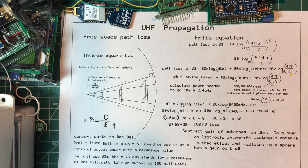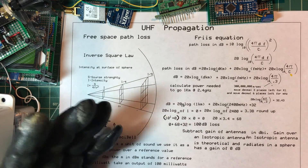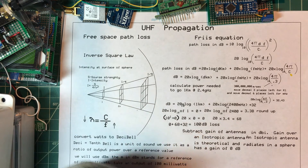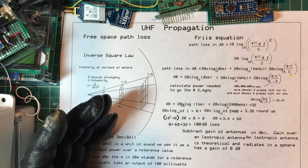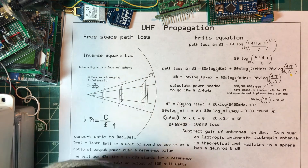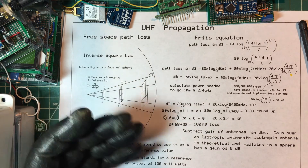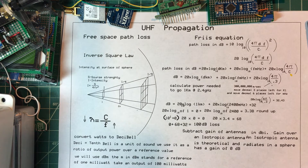A decibel is a tenth of a bel — we use it as a ratio of output power over a reference value. We'll use dBm, where the 'm' stands for a reference of one milliwatt. With 100 milliwatts over 1 milliwatt, the ratio is 100. Log base 10 of 100 is 2, and for power we multiply by 10, so that's 20 dBm. A 100 mW radio is 20 dBm. A one-watt radio is 1000 milliwatts — log base 10 of 1000 is 3, times 10 is 30 dBm. A 1 mW radio is 0 dBm. We have 20 dBm.